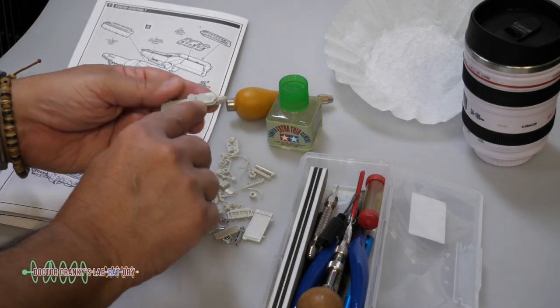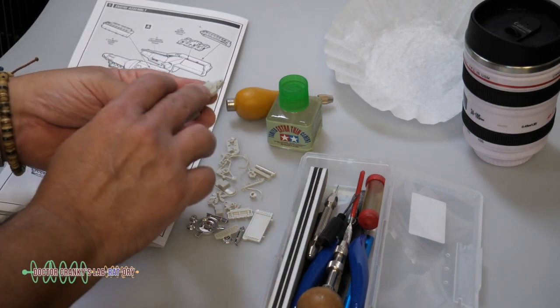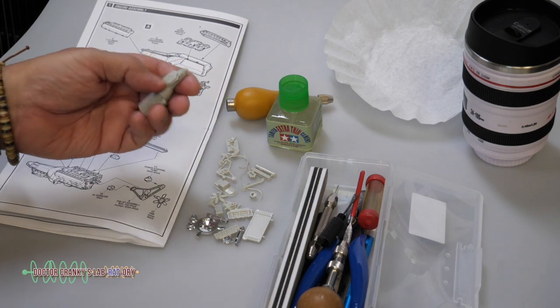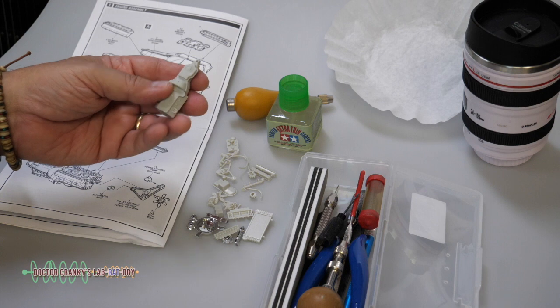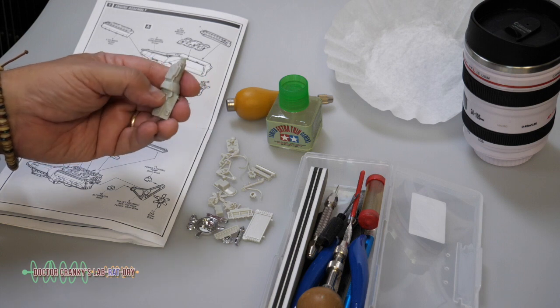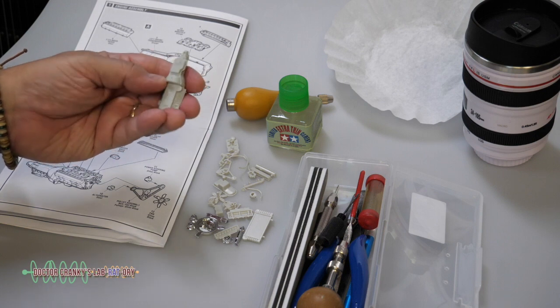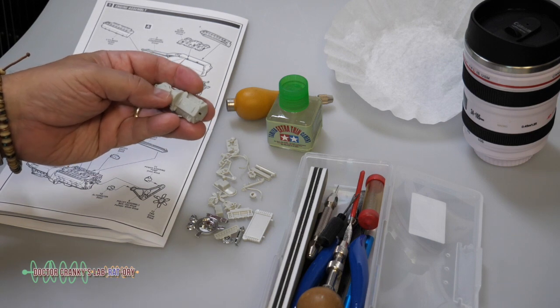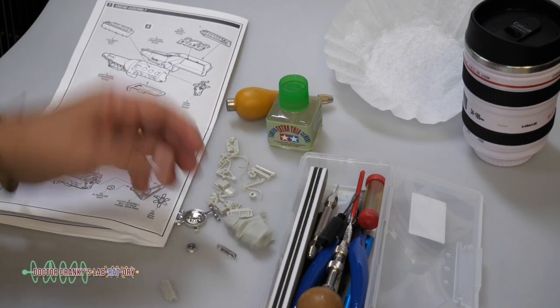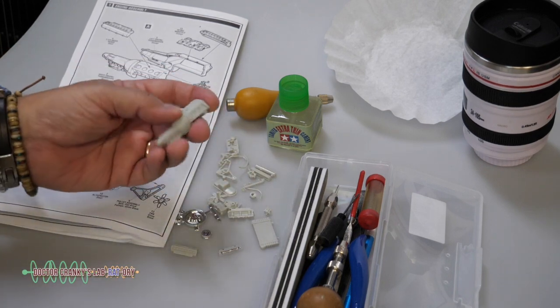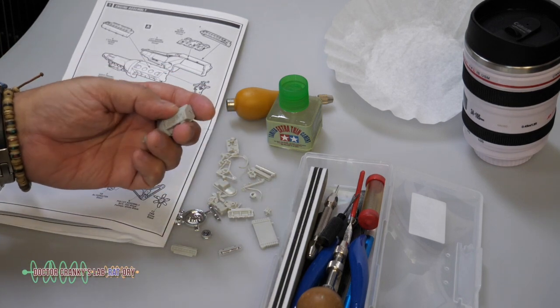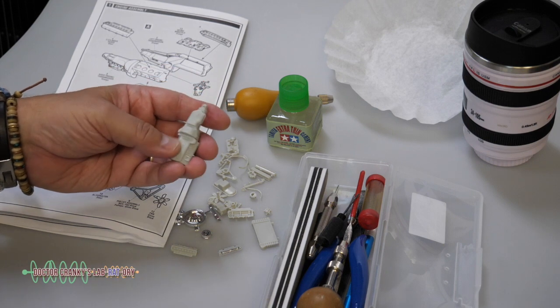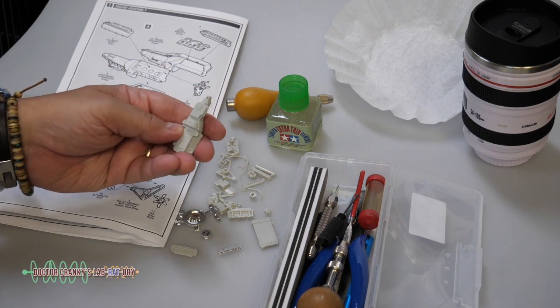This little oil pan here, or transmission pan, has a little dent, which we're not going to worry about that much, because we might be able to do something. So, we're not sweating it. Also, a few other places here, again, you can cover it up with putty or crazy glue mixed in with baking powder or whatever you use. But we're not going to sweat it yet.